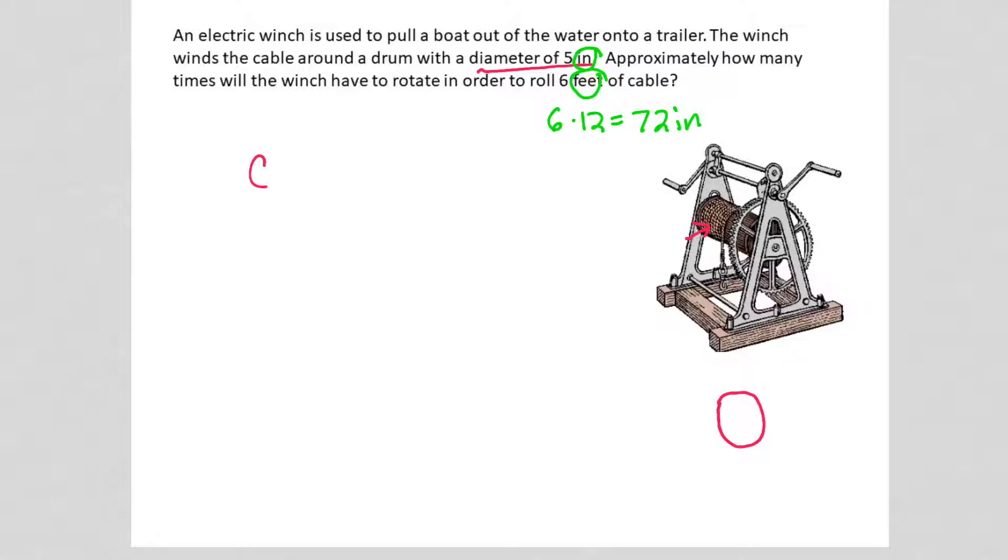So circumference is either pi times diameter or pi times 2 times r. I'm going to use this one. I already have the diameter. So my circumference is pi times 5, which tells me it's 15.7 inches in one turn.